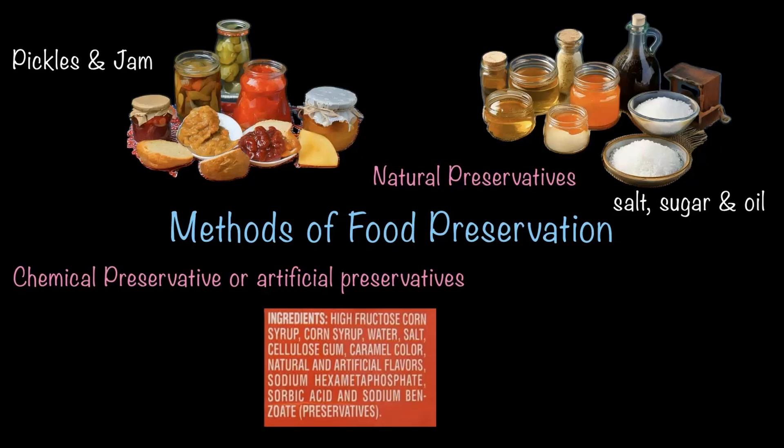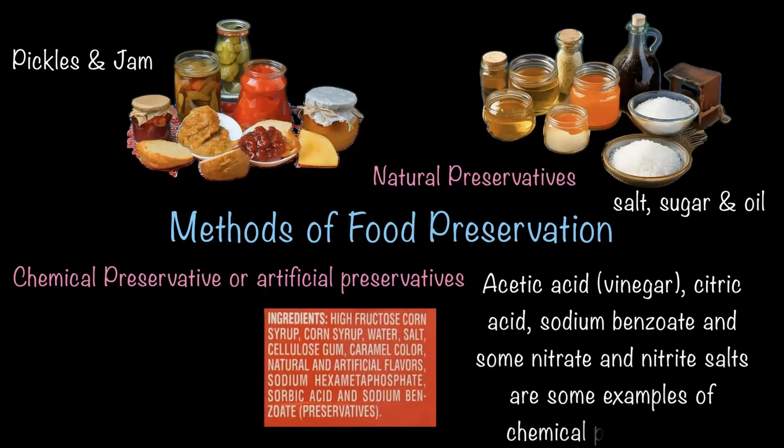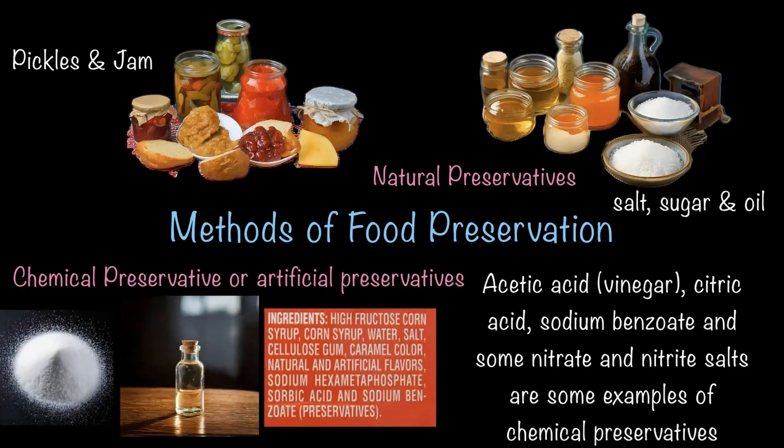Some common examples of chemical preservatives include acetic acid, citric acid, sodium benzoate, and nitrous salt. These chemical names might be a little overwhelming, but for now just remember that these are substances we use to preserve food.